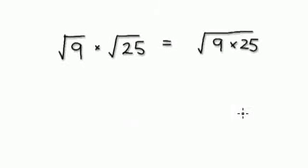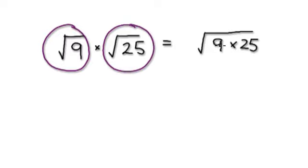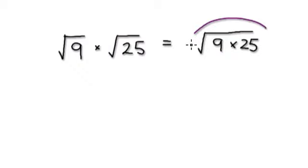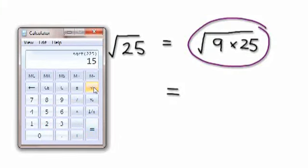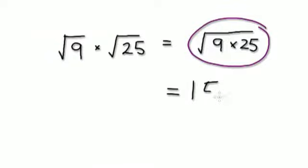Let me ask you this question. If you get the square root of 9, and then you times it with the square root of 25, is that the same as the square root of 9 times 25? So let's try and work this out. Let me get a calculator out. 9 times 25 equals this, and then you take the square root of it — it equals 15. So this thing here is 15.